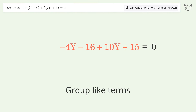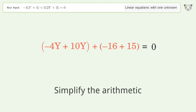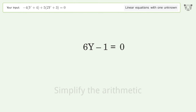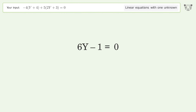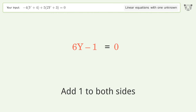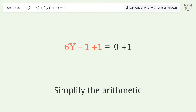Group like terms and simplify the arithmetic. Then group all constants on the right side of the equation by adding 1 to both sides, and simplify the arithmetic.